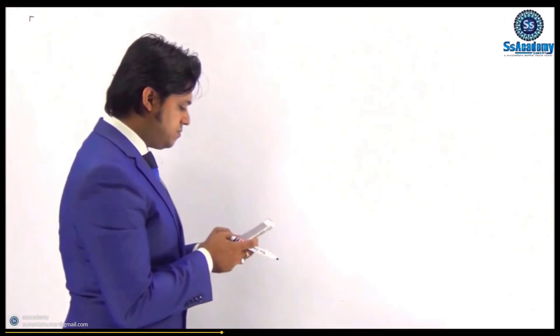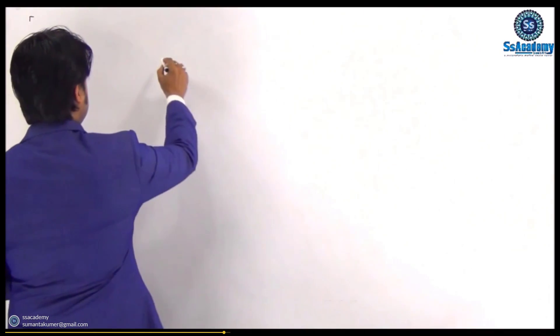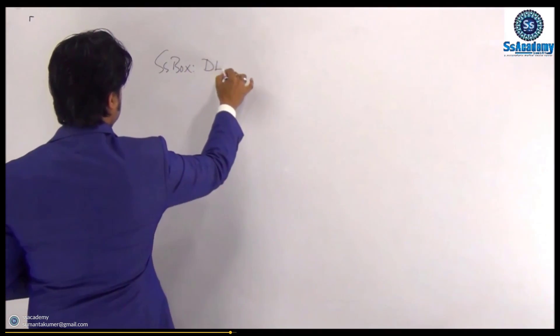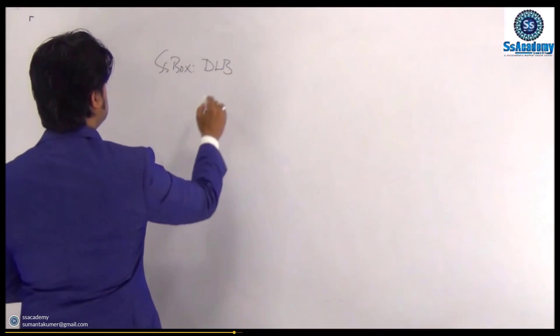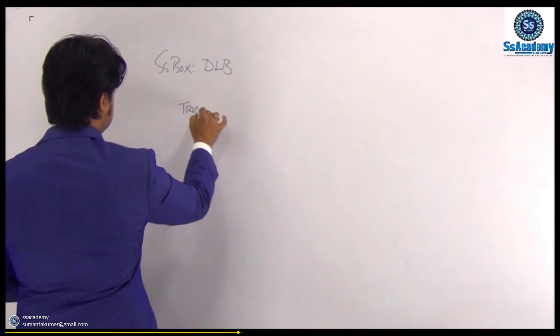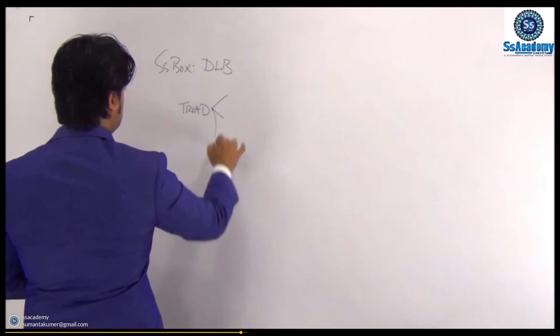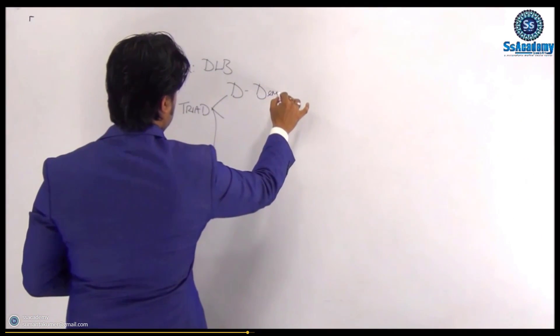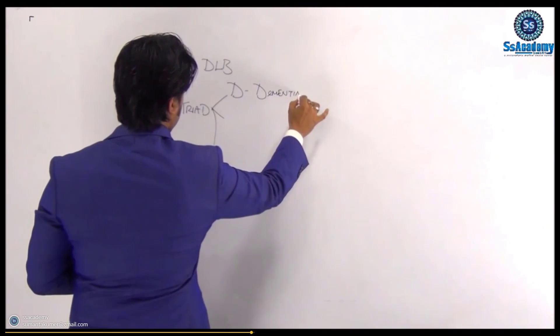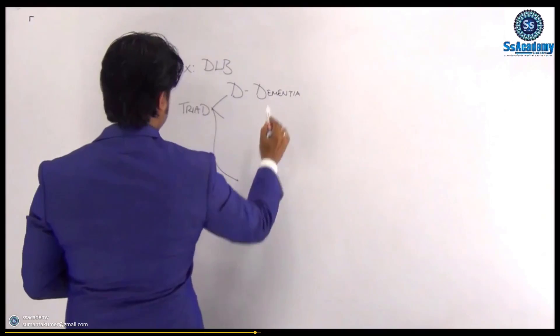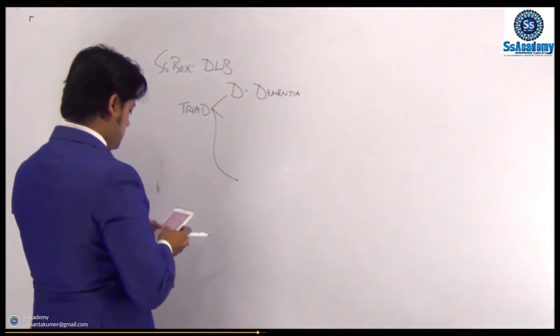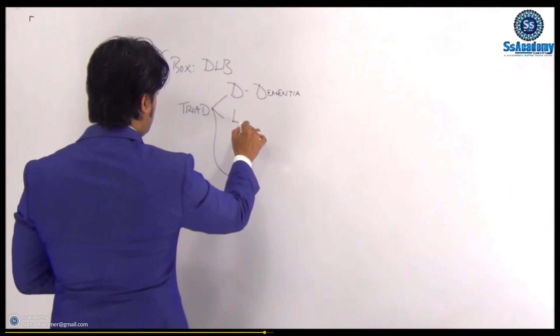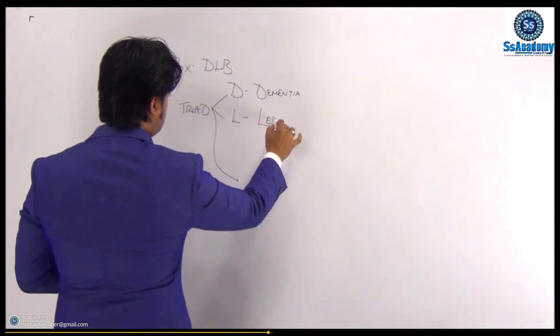So my dear, I'd like to give a box, and this box will be helpful. That is an SOS box, that is dementia with Lewy body. What I'm saying is dementia with Lewy body is a triad. A triad of, as I say, D for dementia. Dementia means progressive cognitive impairment, that is important. L, just write it down, L for neuroleptics.